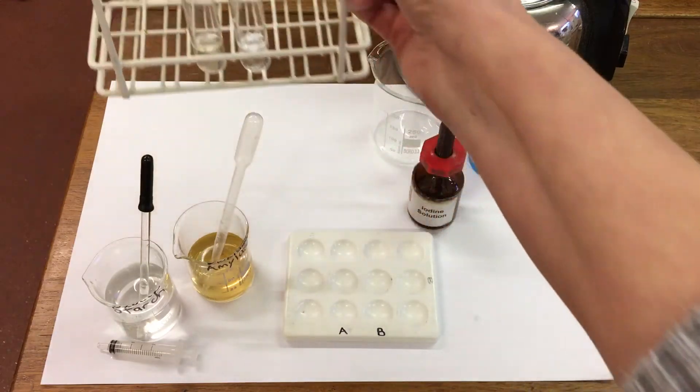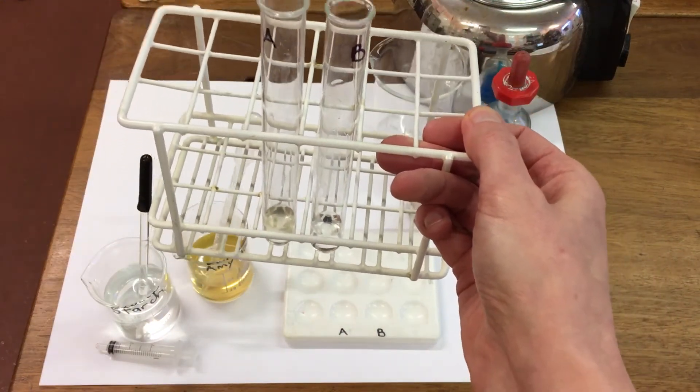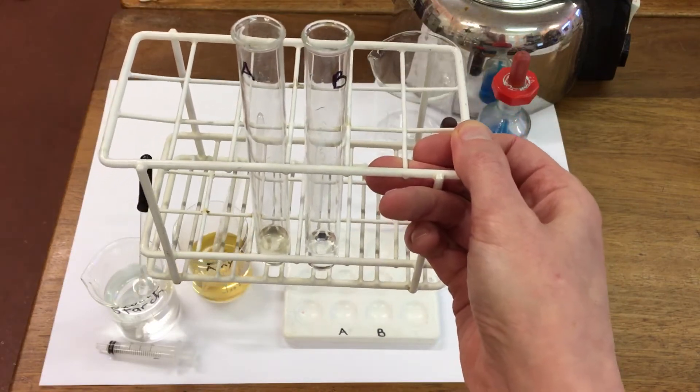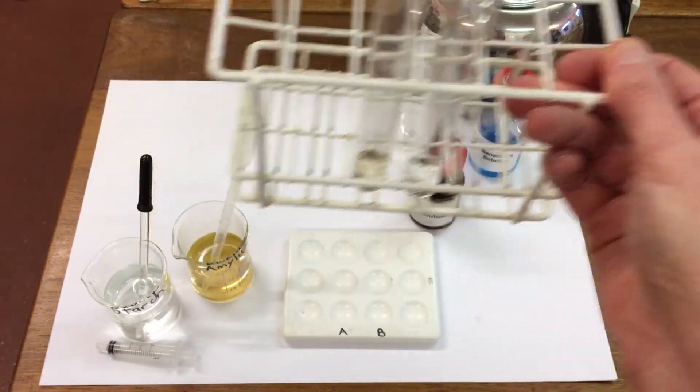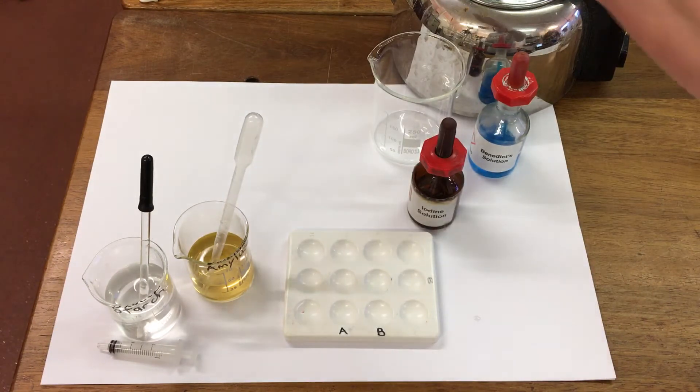So in test tubes A and B, I've got 2 ml of starch. A has our enzyme amylase and B has water. We're going to leave these tubes for approximately one hour and then test them to see the results.